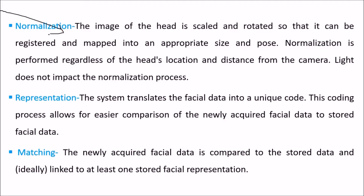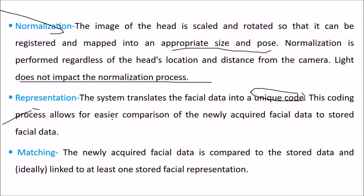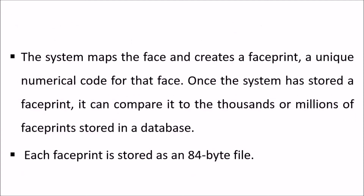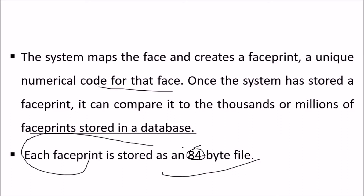Normalization: the image of the head is scaled and rotated to be registered and mapped into the appropriate size and pose. Normalization is performed regardless of head location and distance from the camera, and lighting does not impact the normalization process. Representation: the system translates facial data into a unique code, allowing easier comparison of newly acquired facial data to stored facial data. Matching: the newly acquired facial data is compared to stored data and ideally linked to at least one stored facial representation.